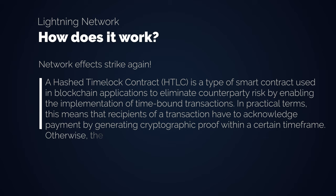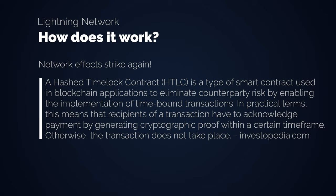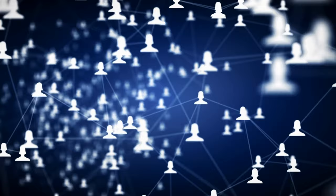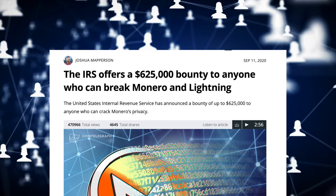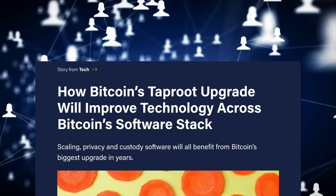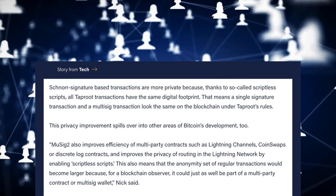In practical terms, recipients of a transaction have to acknowledge payment by generating cryptographic proof within a certain time frame; otherwise, the transaction does not take place. Going back to the mentioned privacy, you actually don't even know whose channels you are using, because it's all behind Onion and Tor's privacy technologies. Breaking the Lightning network has the same bounty as breaking the Monero network, which is supposedly the strongest privacy coin.